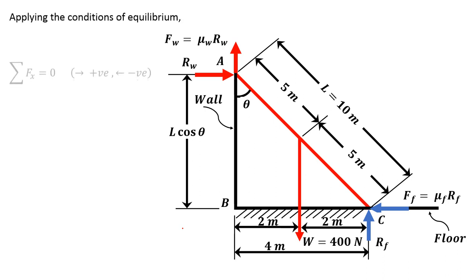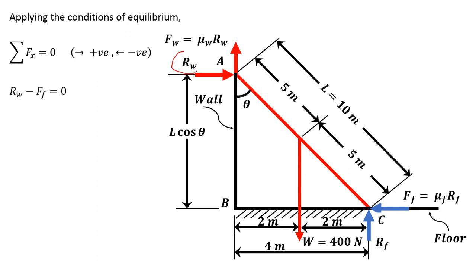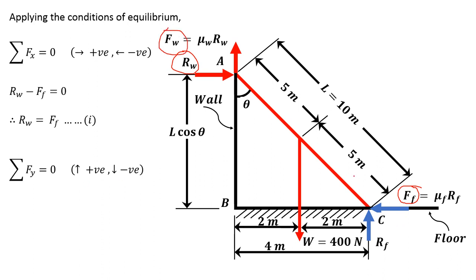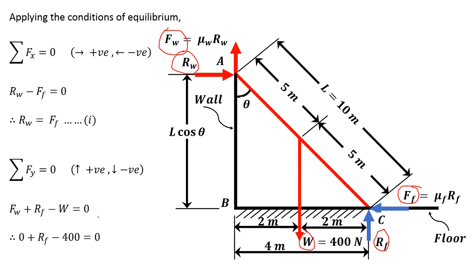Applying the conditions of equilibrium: for ΣF_x = 0, taking rightward forces as positive and leftward as negative, R_W is positive and F_F is negative, giving R_W minus F_F equals 0, so R_W equals F_F (equation 1). For ΣF_y = 0, taking upward as positive and downward as negative: F_W plus R_F minus W equals 0. Since F_W is 0 and W is 400 Newton, R_F equals 400 Newton.